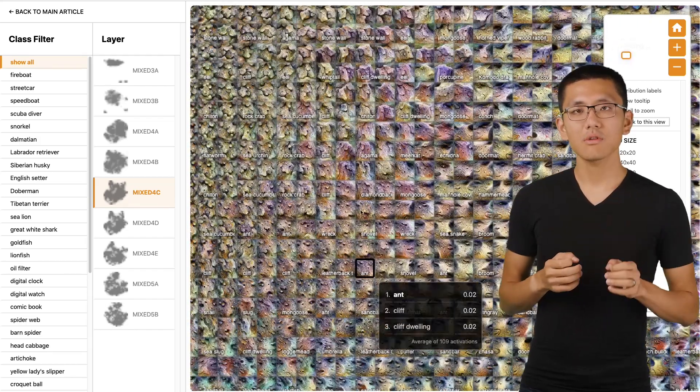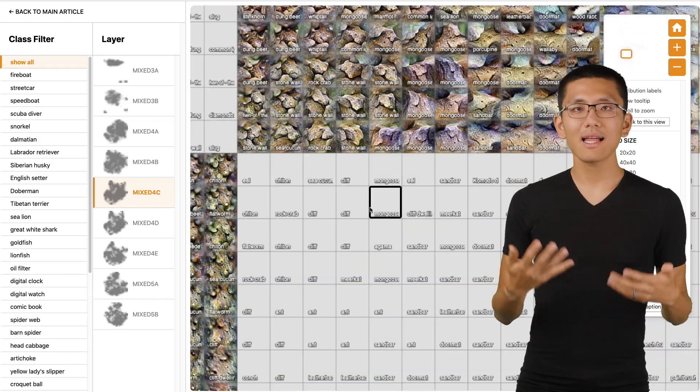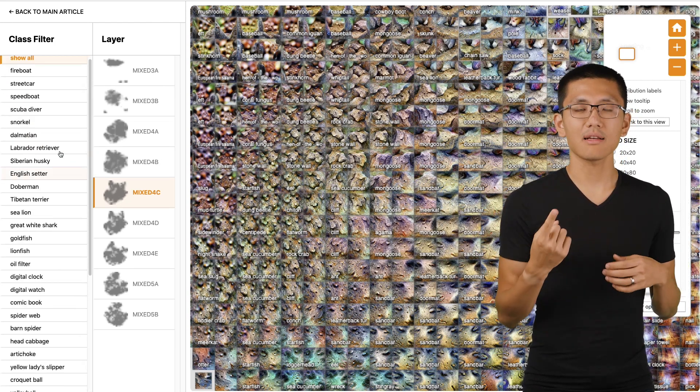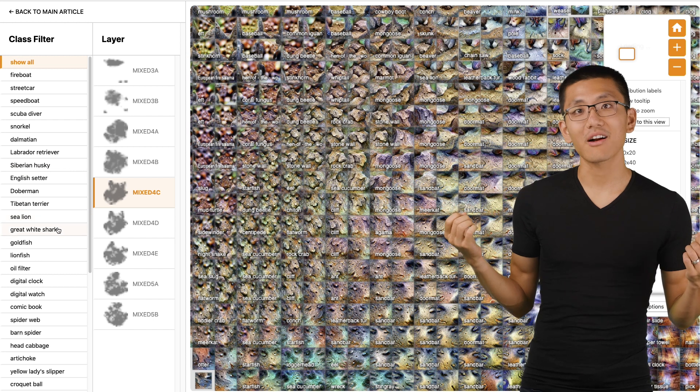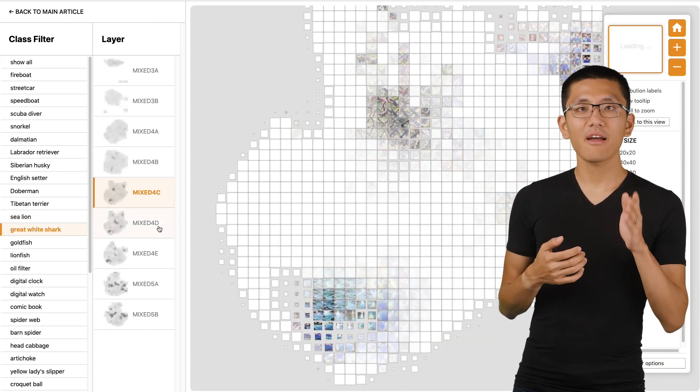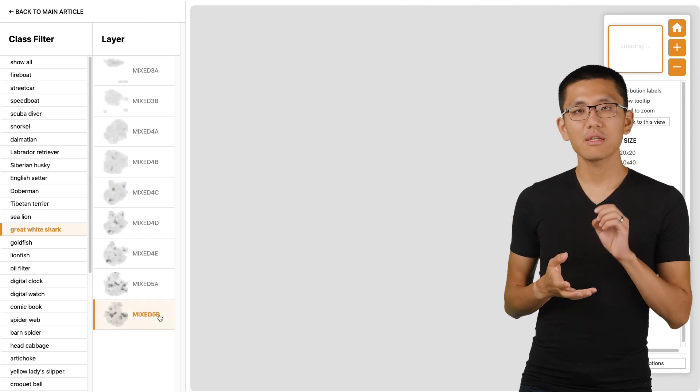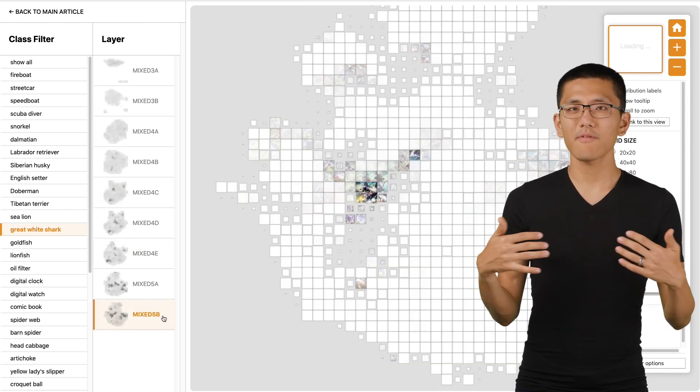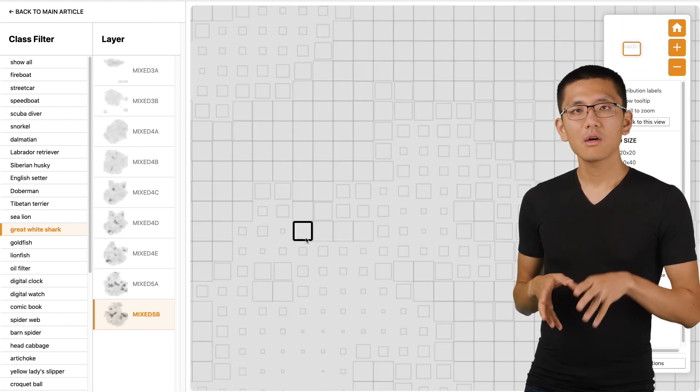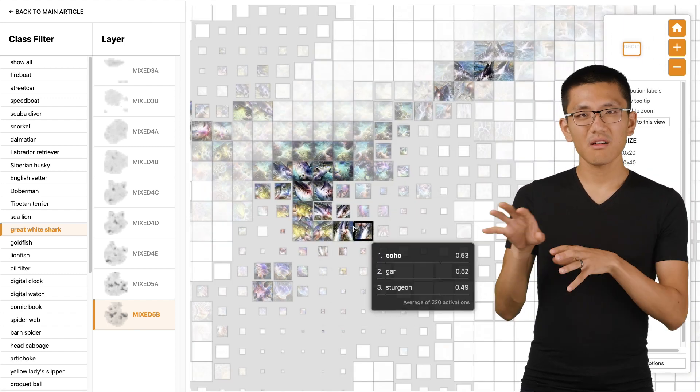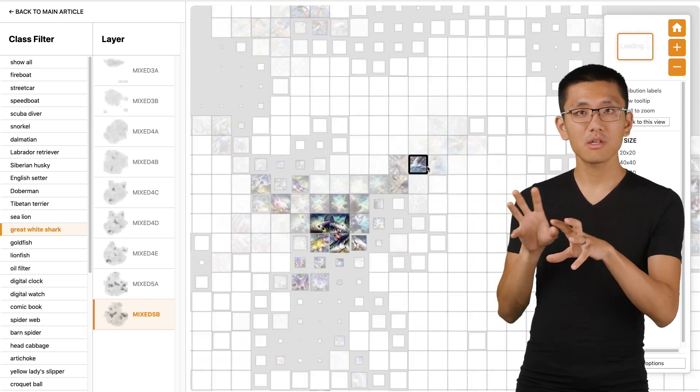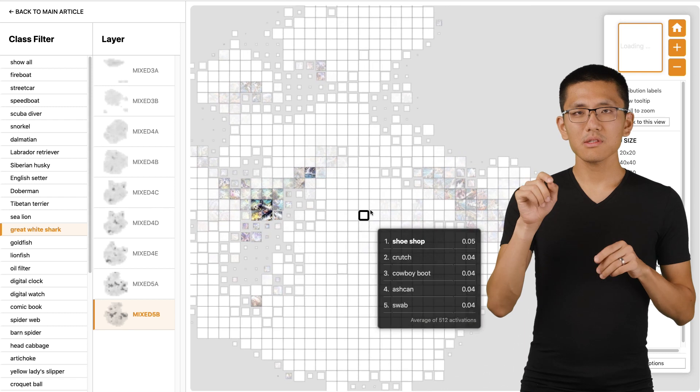We can also look at specific class activations in the atlas. So we can filter it out and just look at one particular class. Let's say the great white shark. I like to start with the bottom-most layer, mixed 5B, since that's going to show images that are most similar to kind of the final prediction. So we can really recognize what it is we're seeing. It's meaningful. We see some regions we'd expect, various fish-like imagery, and over here there's some water-related imagery, right? And what's this over here? Yeah, is that a baseball?